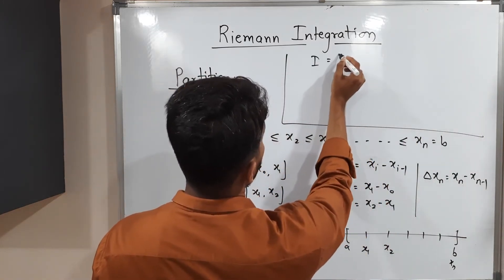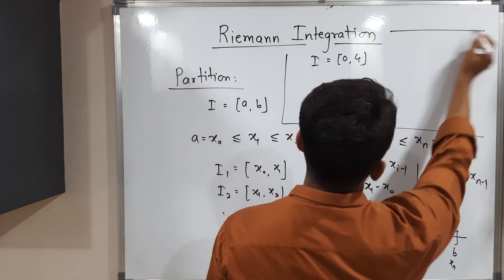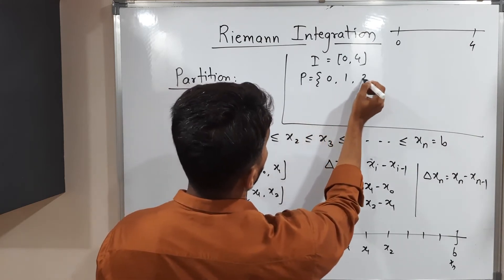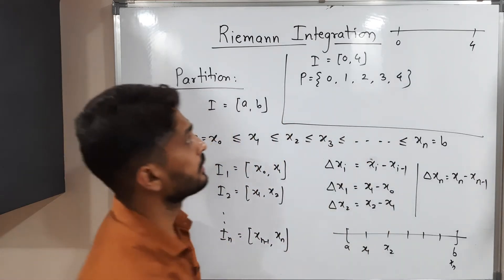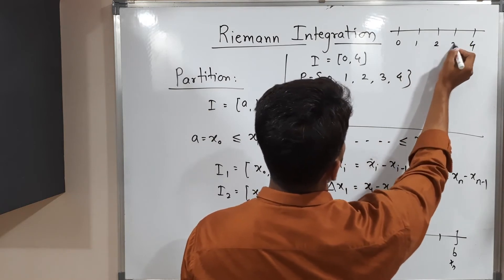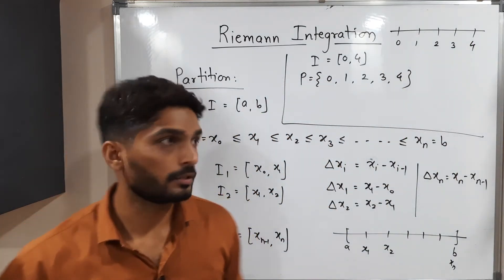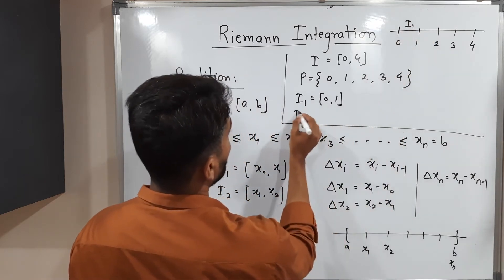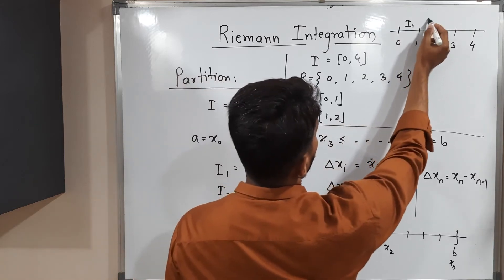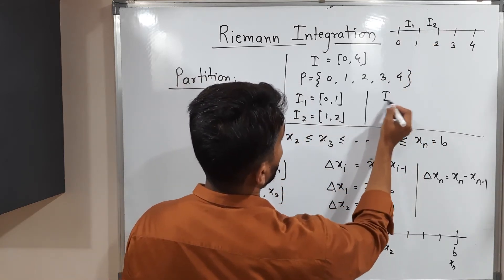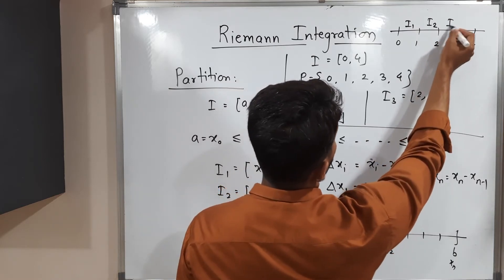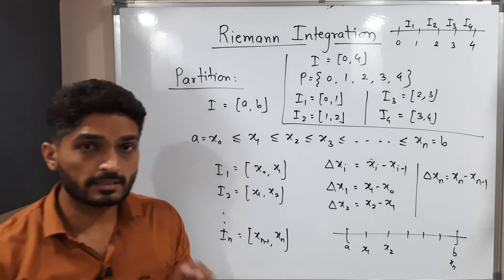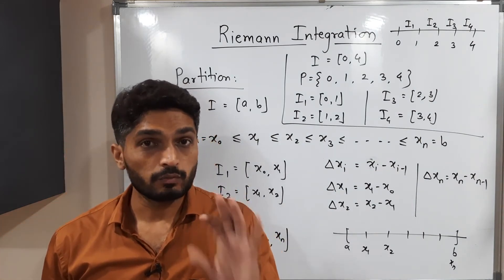Consider the closed interval [0, 4]. We consider a partition P = {0, 1, 2, 3, 4}. So the first interval I1 = [0, 1], I2 = [1, 2], I3 = [2, 3], and I4 = [3, 4]. Because of these three interior points, the main interval is subdivided into 4 sub-intervals.